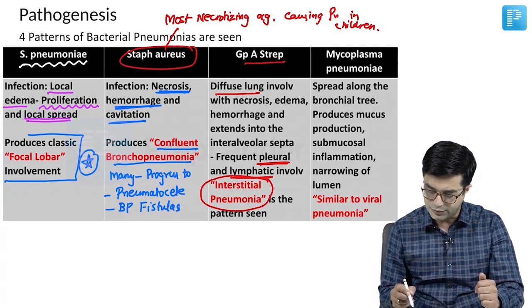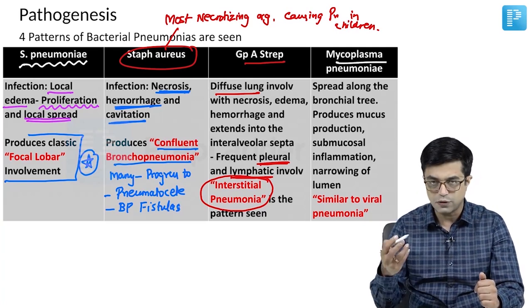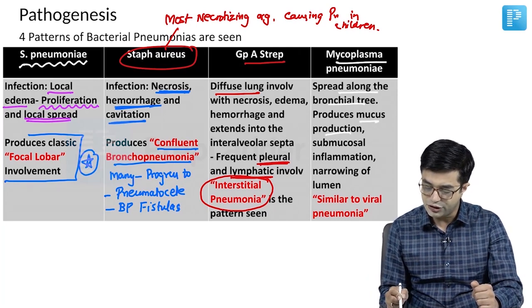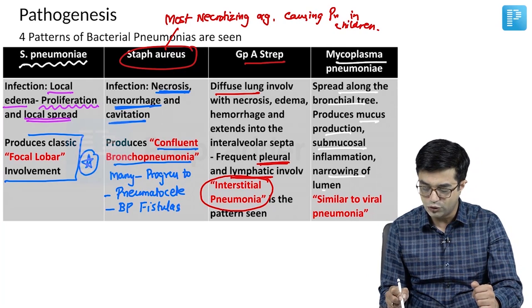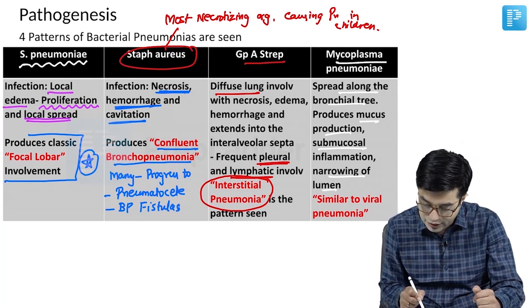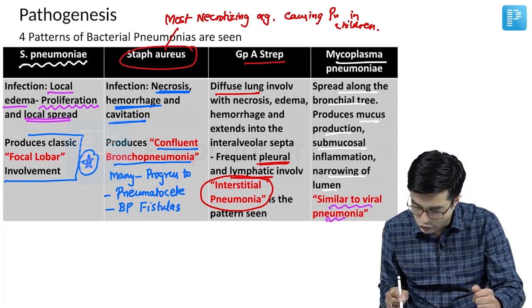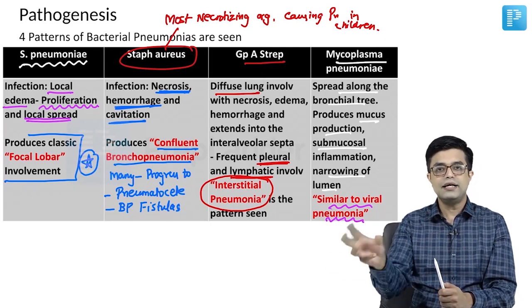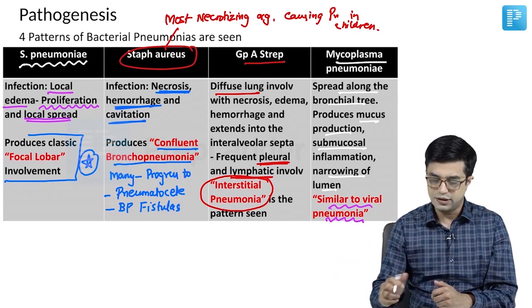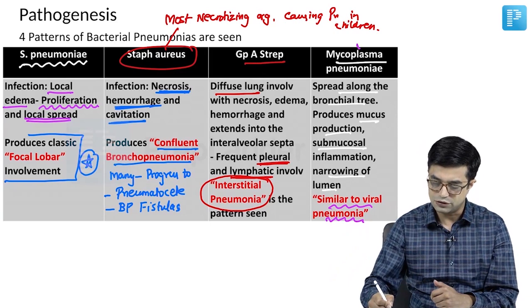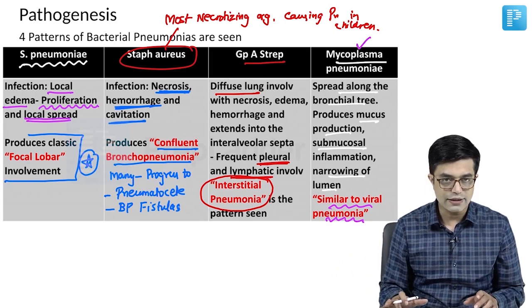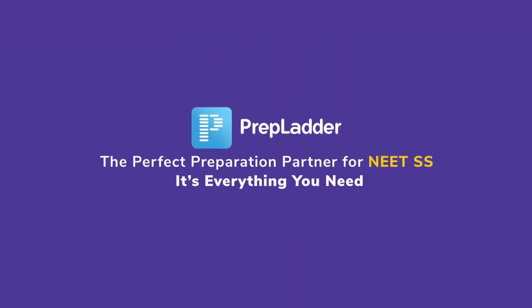The fourth category is Mycoplasma pneumoniae, the most common cause of pneumonia above five years of age. It spreads along the bronchial tree, produces mucus secretion, peribronchial inflammation, and narrowing of the lumen — similar to viral pneumonia. So if asked which bacterial pathogen is sometimes indistinguishable from viral pneumonia, the answer is Mycoplasma pneumoniae. These are the patterns and keywords you need to remember.